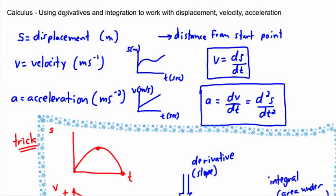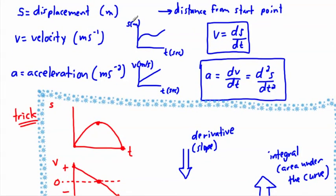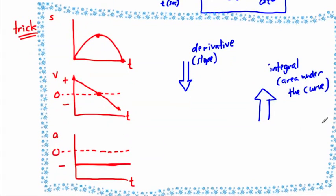We were just looking at how to use derivatives and integration in order to work with displacement, velocity, and acceleration. If you start with a displacement graph and want to know the velocity, you take the derivative — velocity is the derivative of displacement, and acceleration is the derivative of velocity, or the second derivative of displacement. Conversely, if you want to go up, you take the integral.